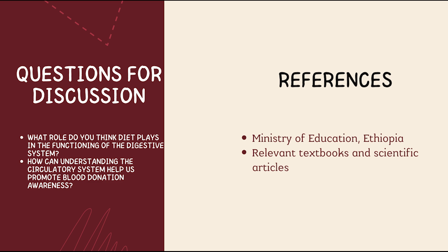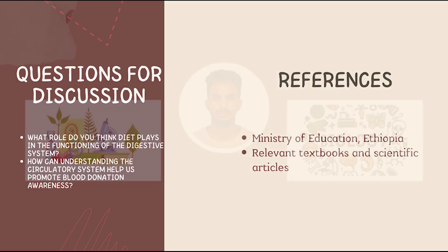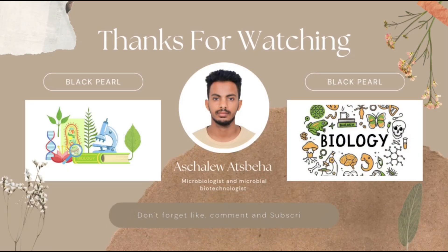Now it's your turn: How does a healthy diet affect the digestive system? Why is understanding blood type important for donation? How does pollution affect the respiratory system? Share your thoughts in the comments or with your classmates. Thanks for learning with me today — the human body is complex, but understanding it empowers us to live healthier, longer lives. This lesson was developed using the Ministry of Education's biology curriculum and trusted science resources. Always refer to your textbook and class notes for more.